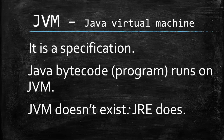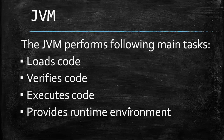Suppose you have a bytecode and you want to run it on a mobile device — your mobile must have a supported version of JRE installed. If you want to run your Java program on a smart television, that television must also have a Java Runtime Environment installed which is supported.